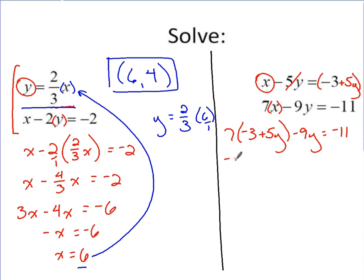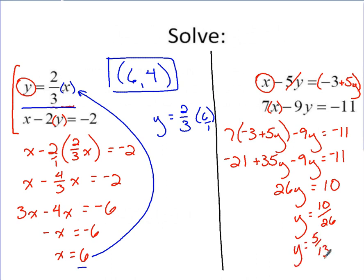If we solve, distribute the 7, get negative 21 plus 35y minus 9y equals negative 11. Combining like terms, at the same time I'm going to add 21 over, 35 minus 9y equals 26y. Adding 21 over, we've got 10 over here. If you divide by 26, y is going to be 10/26, which reduces to 5/13.